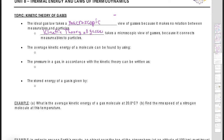The kinetic theory gives us that microscopic view of gases, connecting measurables to particles. This is just a set of equations — we won't dive too far into where they come from. Remember: any particle that is moving has a kinetic energy, whether it's a car or a water molecule. The average kinetic energy for a particle is (3/2)kT.